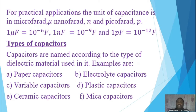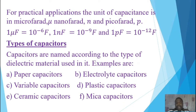For practical applications, the unit of capacitance is in microfarad (µF), nanofarad (nF), and picofarad (pF). Capacitors used in electronic circuits are usually measured in these sub-units. One microfarad equals 10⁻⁶ farad, one nanofarad equals 10⁻⁹ farad, and one picofarad equals 10⁻¹² farad.